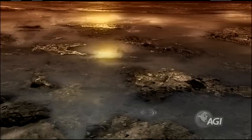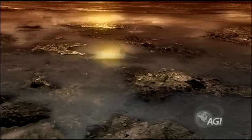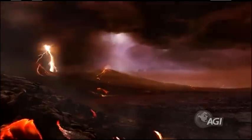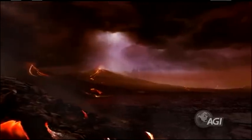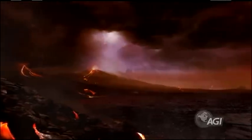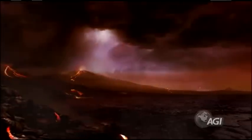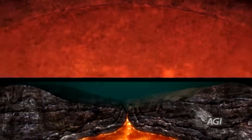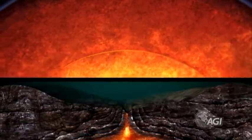More than 4 billion years ago, Earth's ocean and atmosphere began to form from the rise of lighter materials out of the mantle. Earth's crust has two distinct types: continental and oceanic.